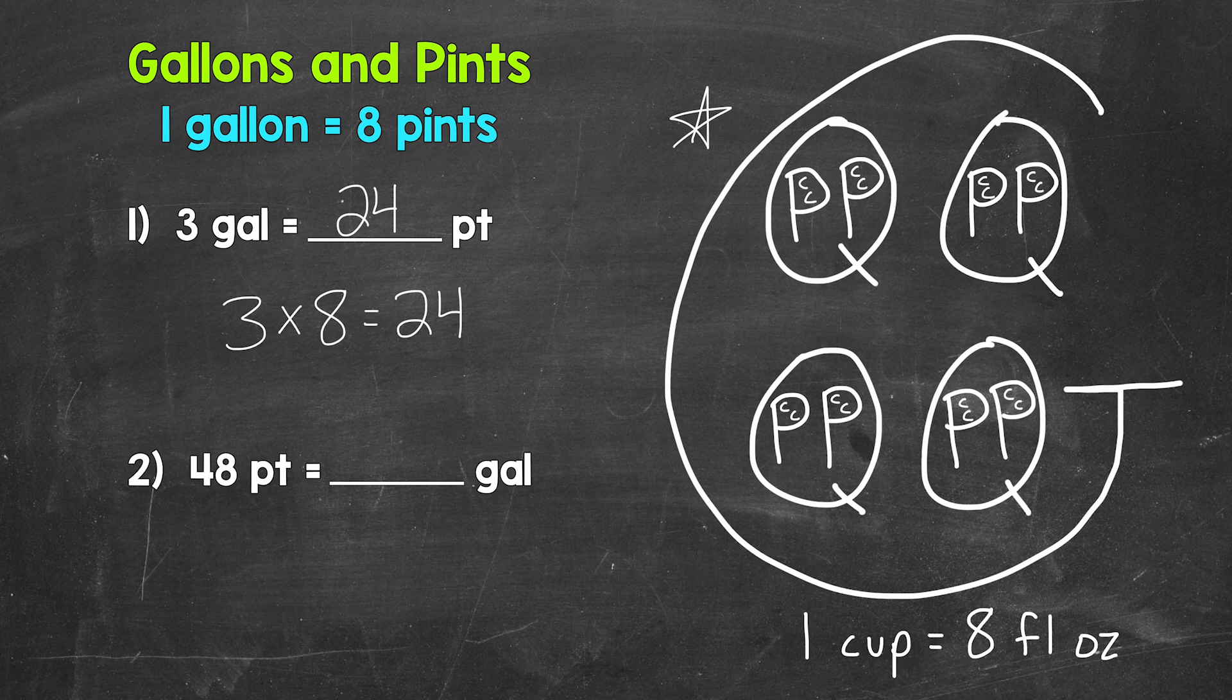Each group of eight pints equals a gallon. So how many groups of eight pints in 48 pints? We need to divide here. We're going to divide by eight. So 48 divided by eight.